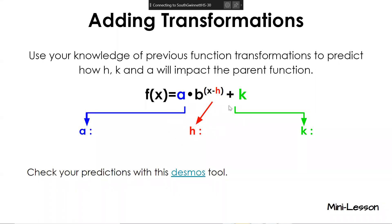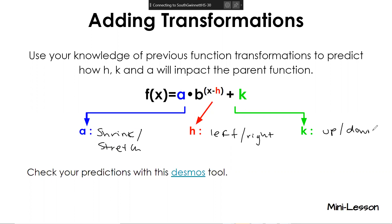This covers transformations, very similar to what we've seen before. A is going to be a shrink or a stretch, h is going to move left or right, and k is going to move up or down. Take a minute and write this down. One thing to point out: you can tell it's an exponential function when x is in the exponent.